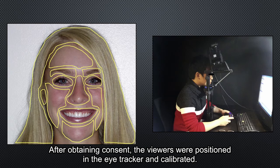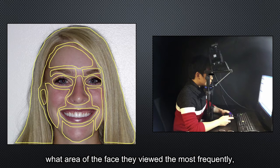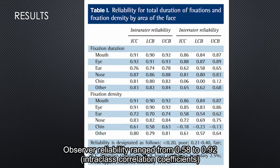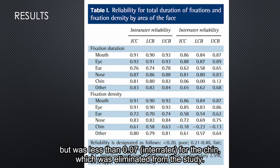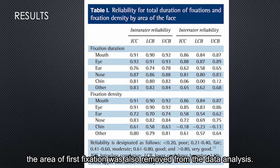After obtaining consent, viewers were positioned in the eye-tracker chair and calibrated. As the images were shown, data were collected concerning which area of the face they looked at most frequently and which area of the face they viewed for the longest total duration. Observer reliability ranged from 0.58 to 0.92 inter-class correlation coefficient, with values less than 0.07 for some raters, which were eliminated from the study. Reliability for the area of first fixation was below 0.1 for both intra- and inter-rater reliability, so the area of first fixation was also removed from the data analysis.